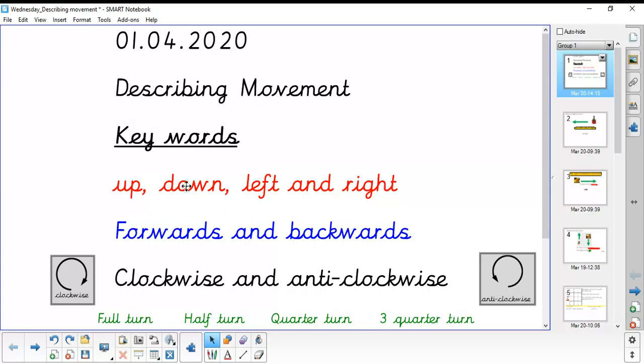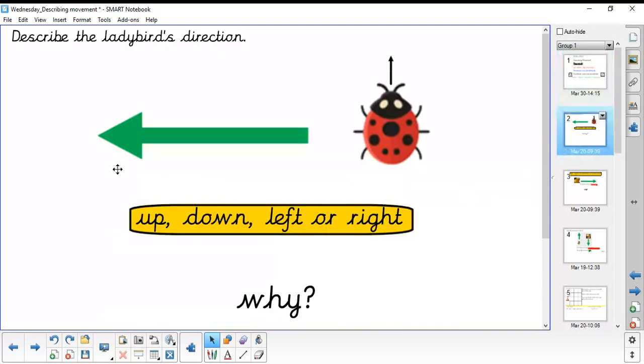We're going to be using some of these key words to help us describe movement for some of the images that we have in this lesson. Let's have a look at the first one. It's asking you to describe the ladybird's direction. Is it moving up, down, left or right? And more importantly, why?